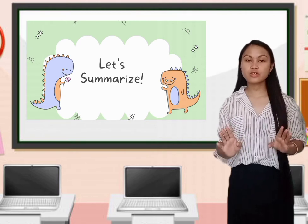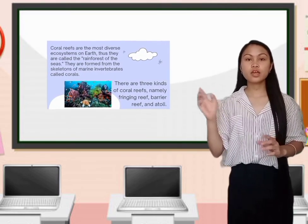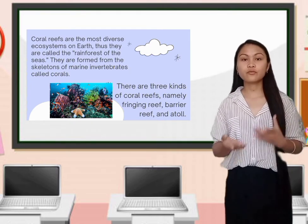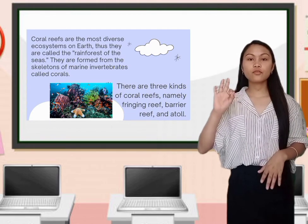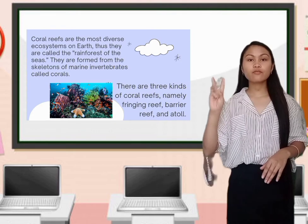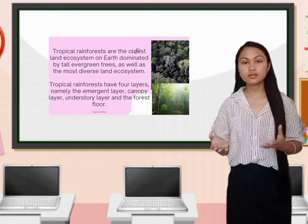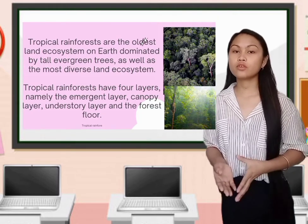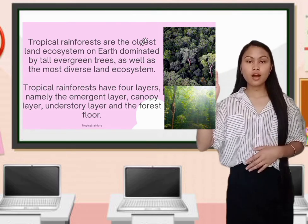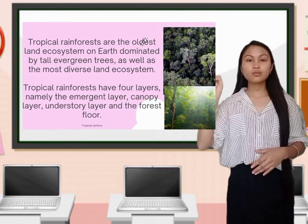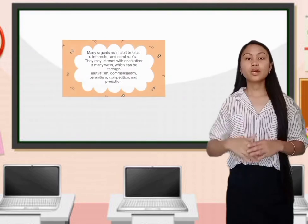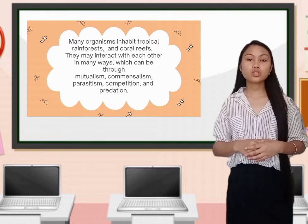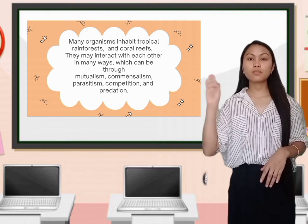In summary: coral reefs are the most diverse ecosystem on Earth and are called the rainforests of the seas. They are formed from the skeletons of marine invertebrates called corals, and there are three kinds of coral reefs — fringing reefs, barrier reefs, and atolls. Tropical rainforests are the oldest and most diverse land ecosystem, with high average temperature and rainfall. They have four layers: emergent, canopy, understory, and forest floor. Many organisms inhabit both tropical rainforests and coral reefs and interact with each other through mutualism, commensalism, parasitism, competition, and predation.